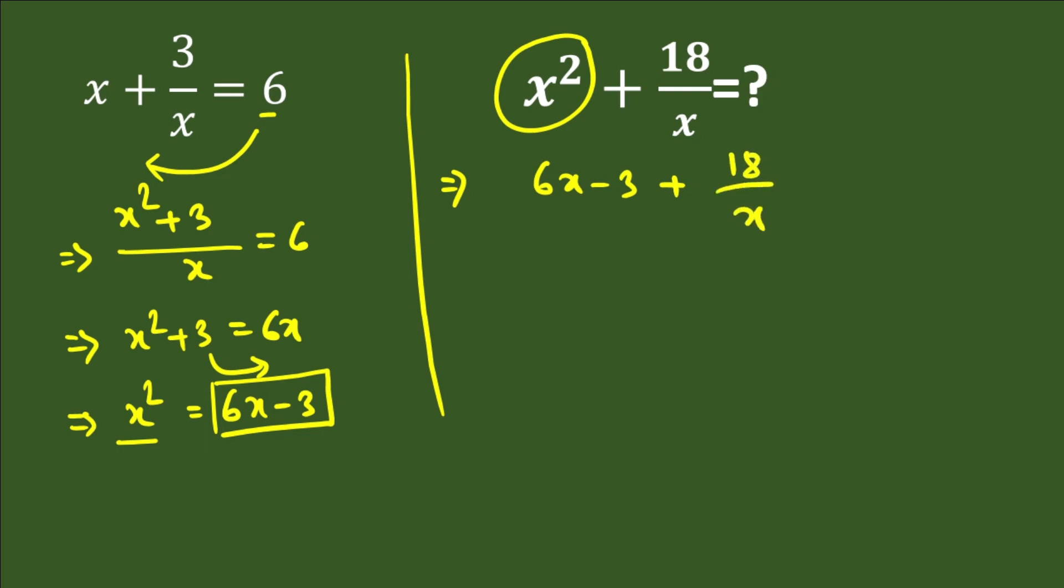Now again let's simplify it. We'll take x as LCM, so it will be 6x squared minus 3x plus 18, all over x. Now again we have the value of x squared, so in place of x squared we'll write 6x minus 3.